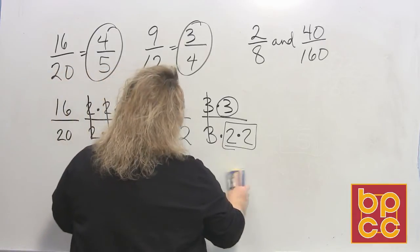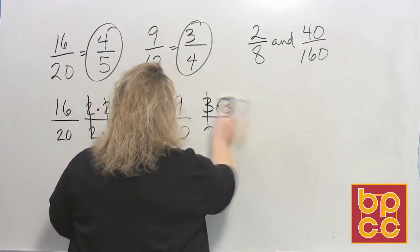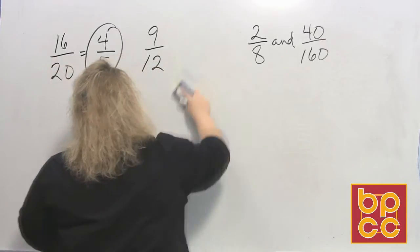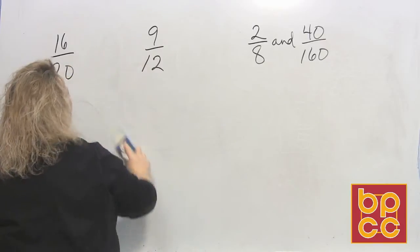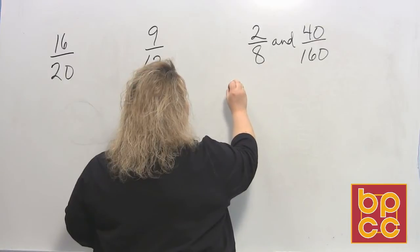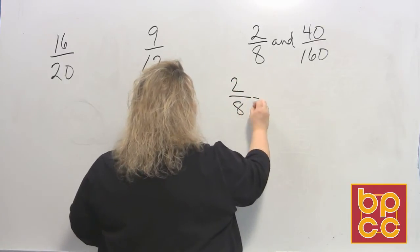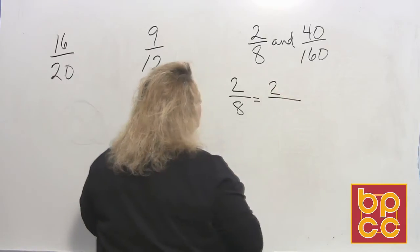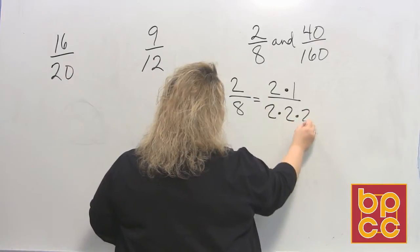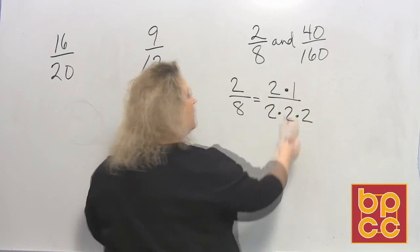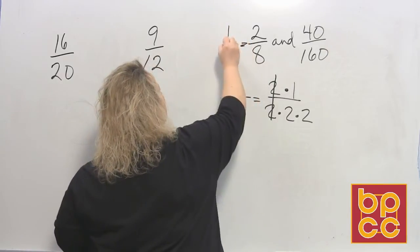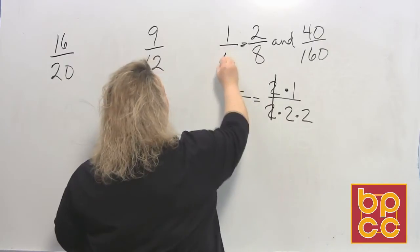Okay, so now let's go do the other two. I'm going to erase this and we're going to do the other two. So we have 2 eighths. 2 eighths when you reduce that, two is nothing but one group of two and one. Eight is three groups of two and we divide out what they have in common which is one group of two and that leaves one at the top and that leaves four at the bottom.